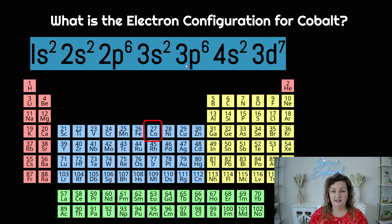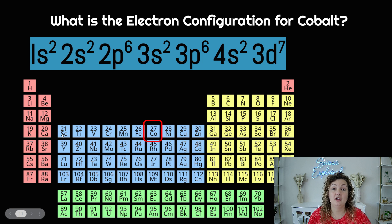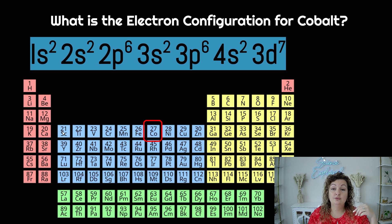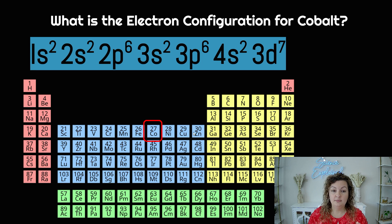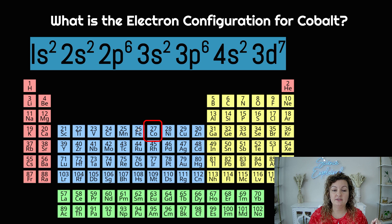3p6 — write that down. Now we're going: 4s2, and we write that down. Now we're entering the D block. Remember, this is not going to be 4d — instead we minus one, so it's 3d. But I don't want 10, because cobalt is right here. So I don't write 3d10. I need to count: 1, 2, 3, 4, 5, 6, 7 — it's 7 over. Therefore it's 3d7, and that will let us know it's cobalt. So we write 3d7, and this entire thing is your electron configuration for cobalt.